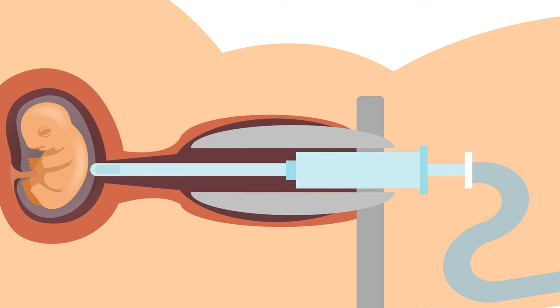A machine vacuum aspiration abortion is performed in a similar way. This method uses a small tube called a cannula. This tube is inserted into the uterus and attached to a pump. When the pump is turned on, the child is torn apart and pulled through the tube into a bottle.